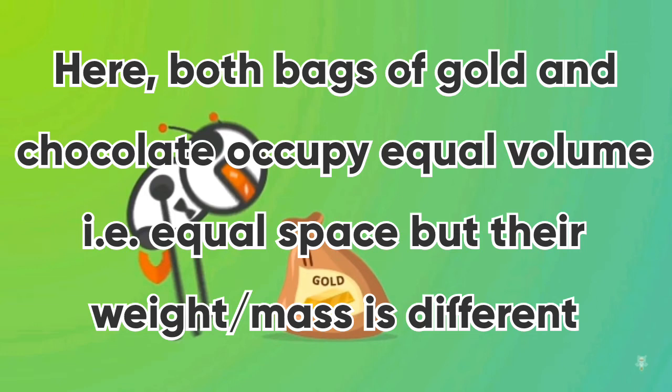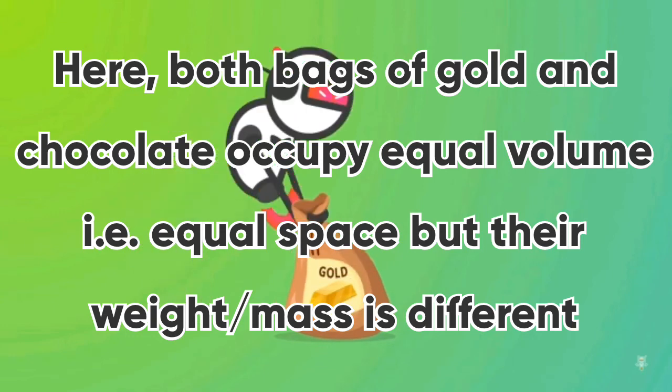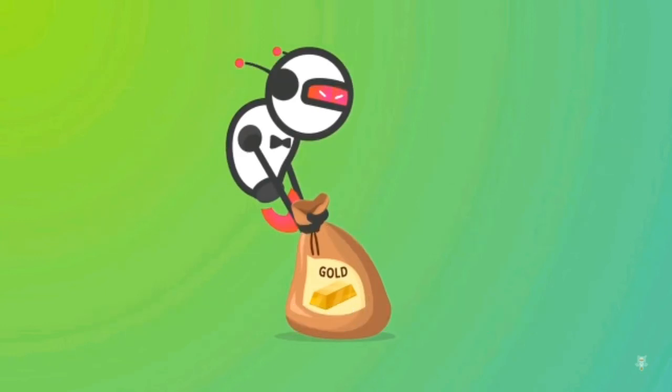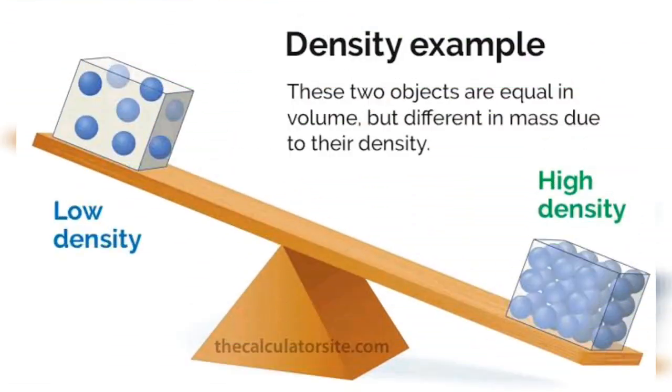Both the volume of chocolate bag and gold bag were same, equal, but their weights were different. To compare the weights or mass of the same volume of different materials, we have to find their densities. What is density?